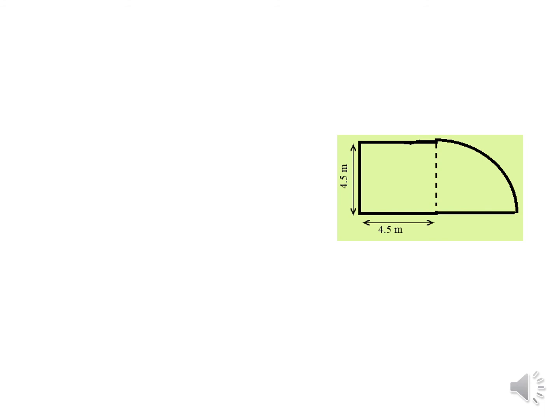A shape is given here. This side is 4.5 meters and this side is also 4.5 meters. The length of both sides is 4.5 meters — everything is the same, all four sides are equal, so it is a square. Together with the square, we have a quarter circle. The radius of the quarter circle is also 4.5 meters, because the opposite side is 4.5 meters.